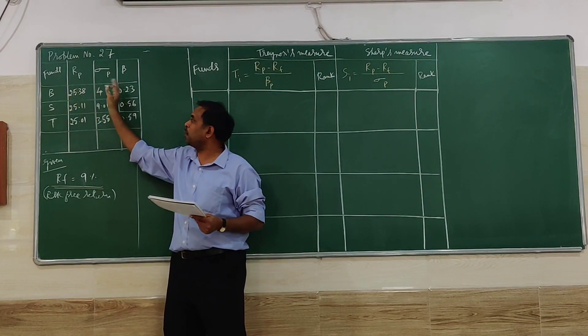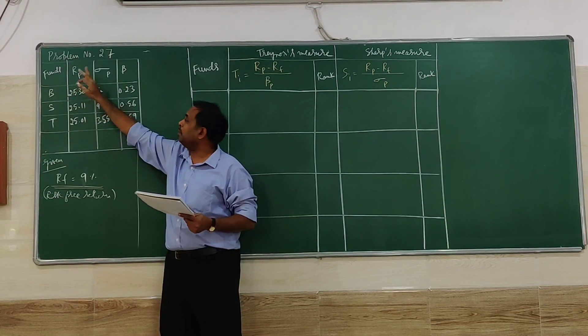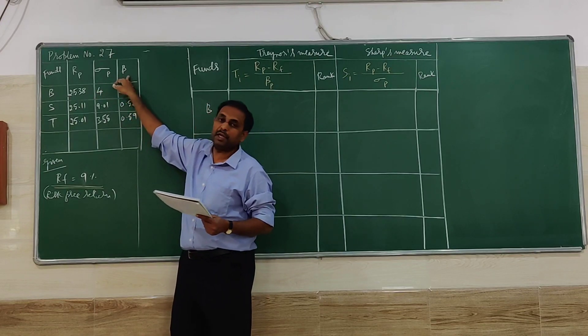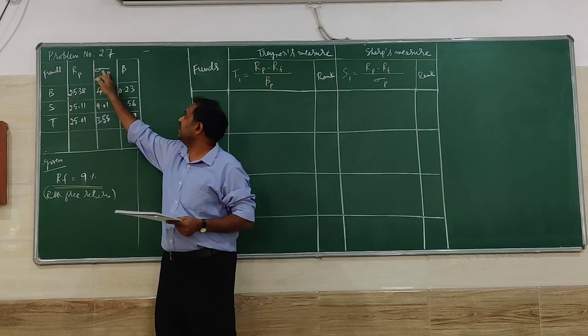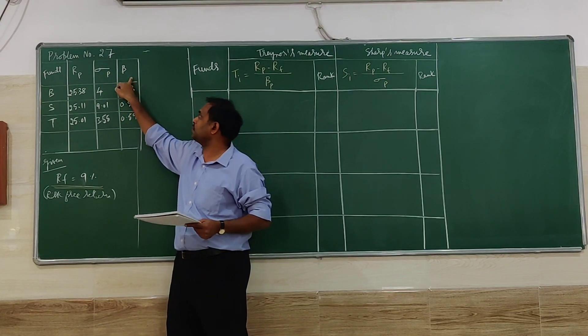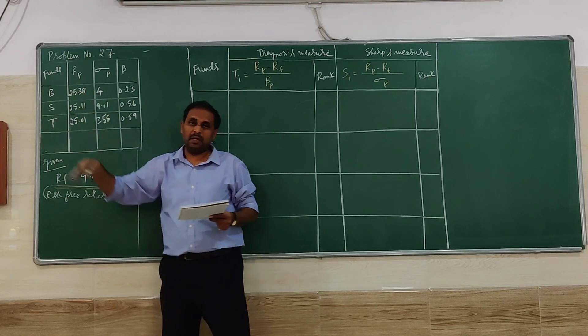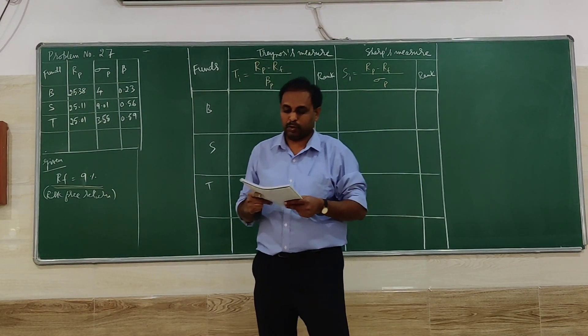The information includes four columns: funds, returns of each particular fund, standard deviation of each one, and beta of each fund. Symbols may be given - b stands for beta, standard deviation, and rp for return. You have to be careful in identifying the symbols first.